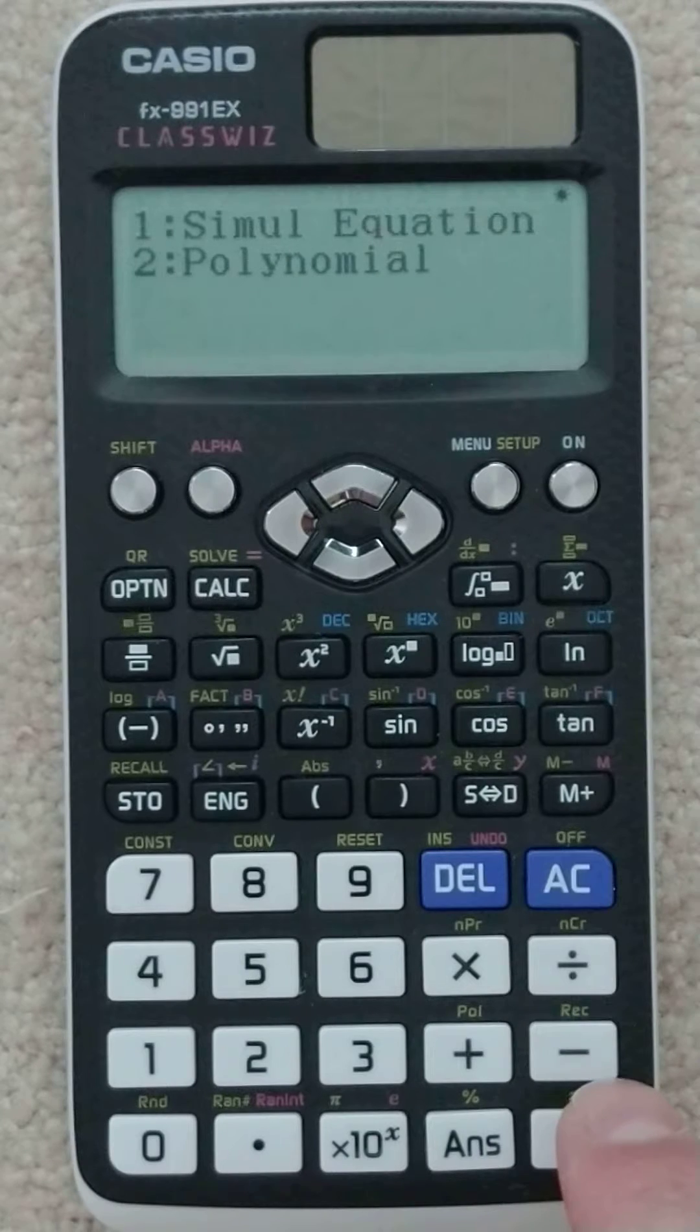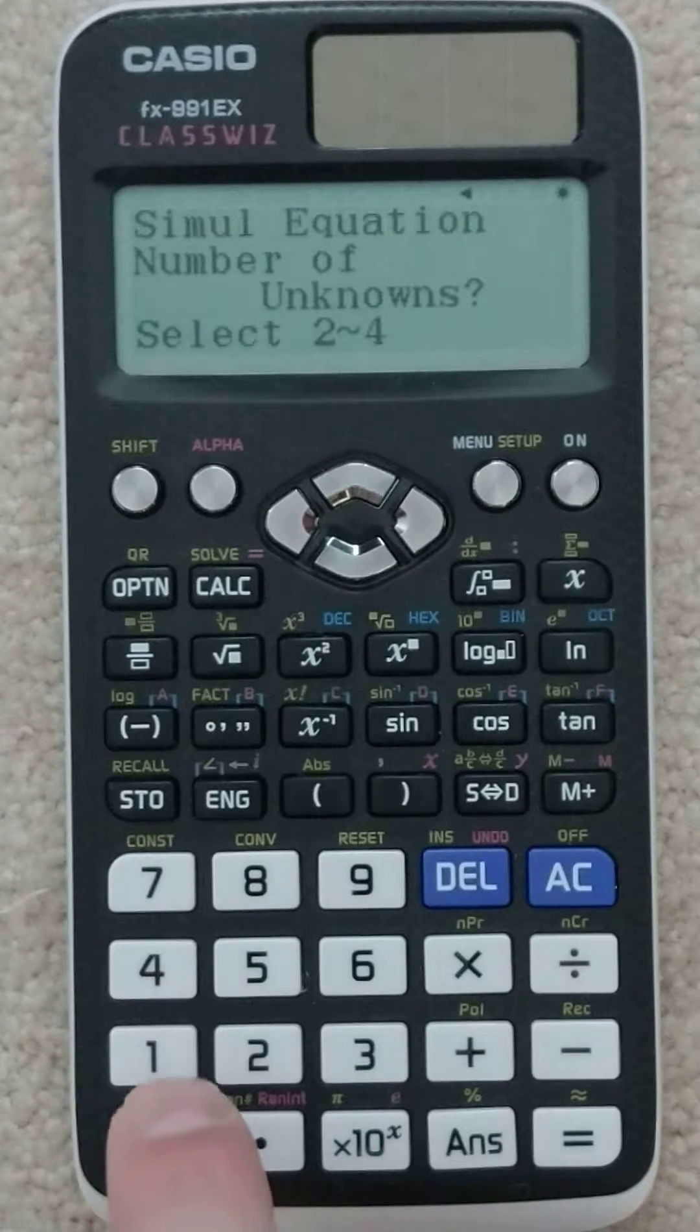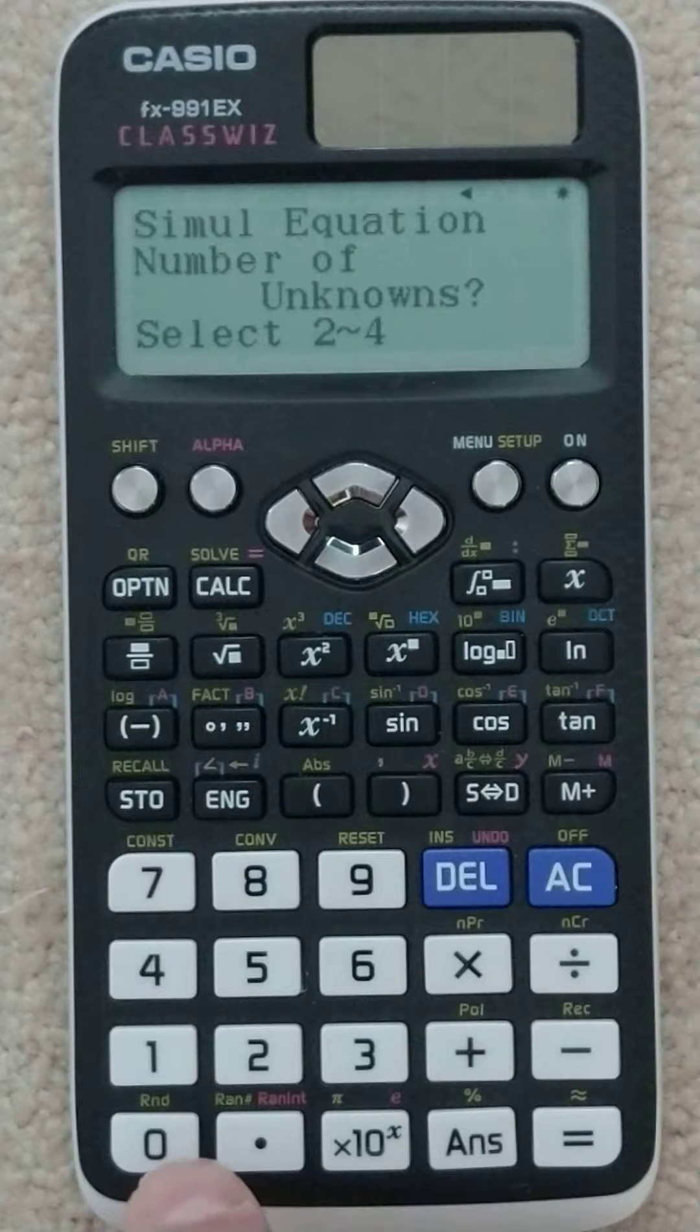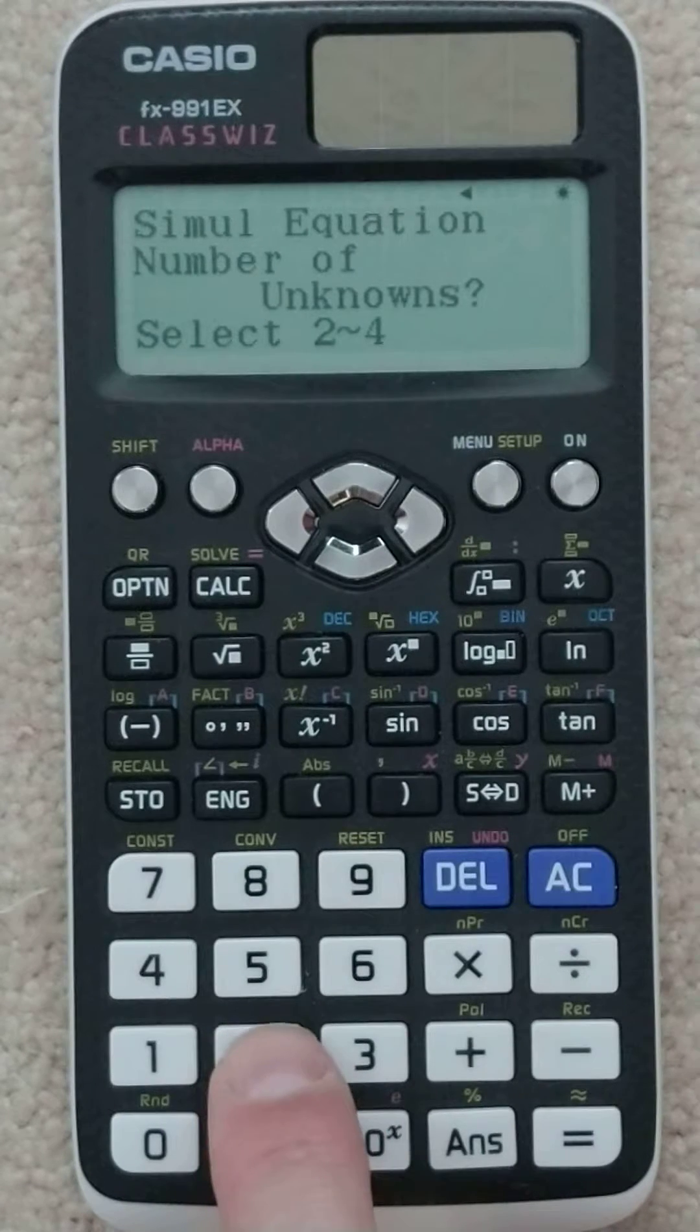Hit equal to go into it. I'm doing simultaneous equations, so I press 1. We are solving for an x and a y, that's two unknowns, so I'm going to type a 2.